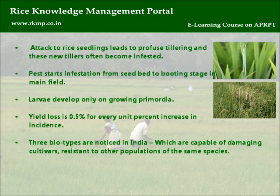The pest starts infestation from seedbed to booting stage in the main field. Larvae develop only on growing primordia. Yield loss is 0.5% for every unit percent increase in incidence. Three biotypes are noticed in India, which are capable of damaging cultivars resistant to other populations of the same species.